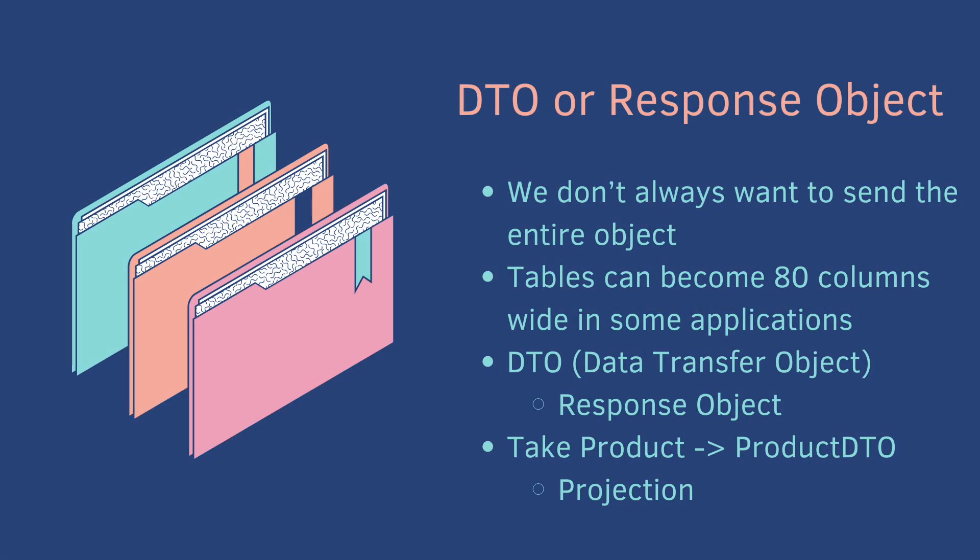A DTO, or Data Transfer Object, is used because we don't always want to send the entire object back — tables can be 80 columns wide in some applications. A DTO only returns the data you need for that endpoint. So we take a product from the database, convert it to a ProductDTO — throwing away fields we don't care about — and send it back to the UI.